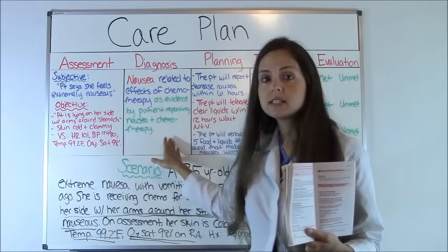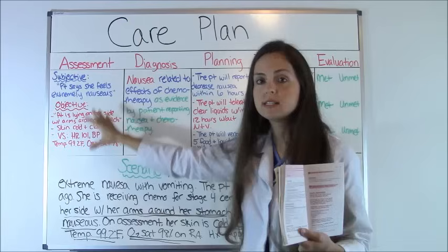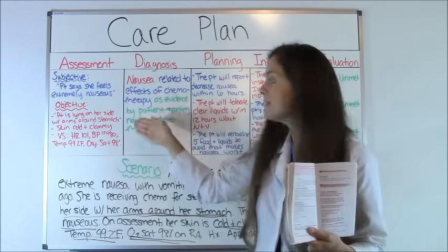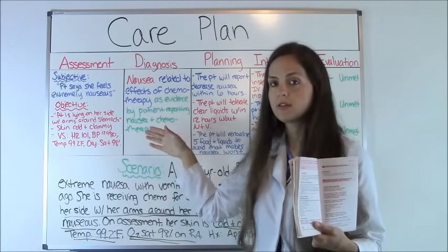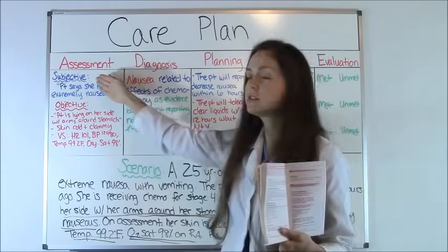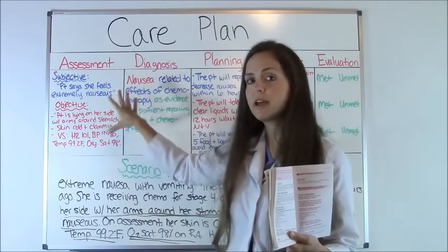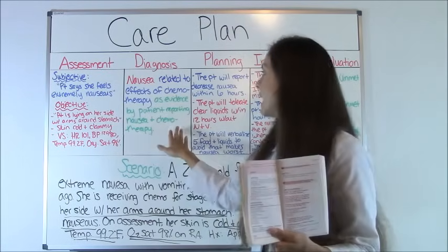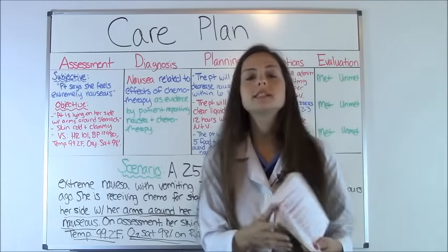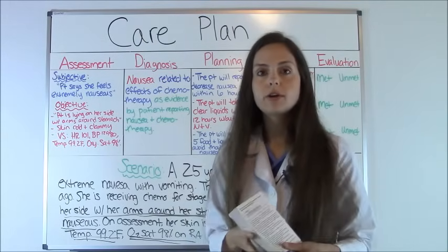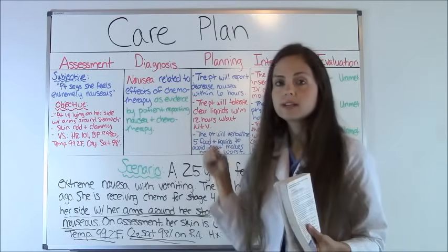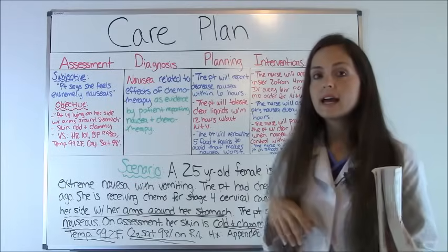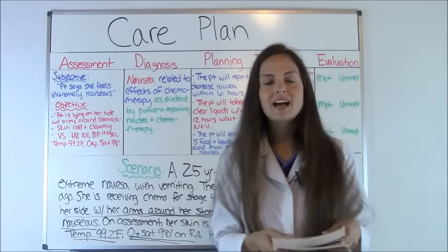Now the third part is 'as evidenced by' — this is the evidence from your patient's presentation of why you're using this diagnosis. So: as evidenced by patient reporting nausea and chemotherapy treatment. That comes from our subjective and objective data where the patient was saying she was nauseous and has been receiving chemotherapy. The full nursing diagnosis reads: 'Nausea related to effects of chemotherapy as evidenced by patient reporting nausea and chemotherapy treatment.'